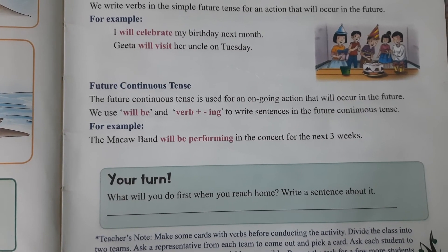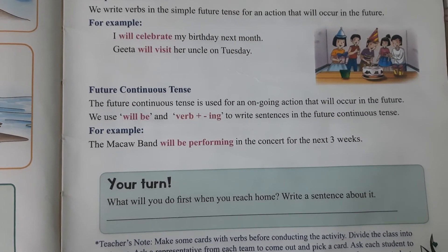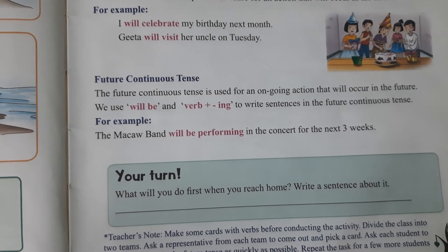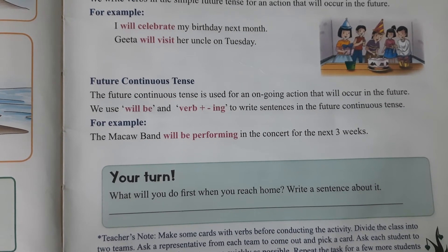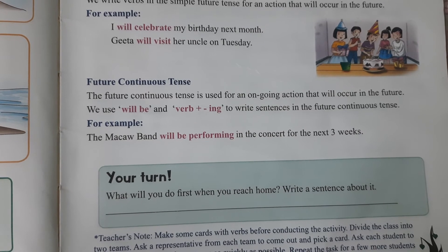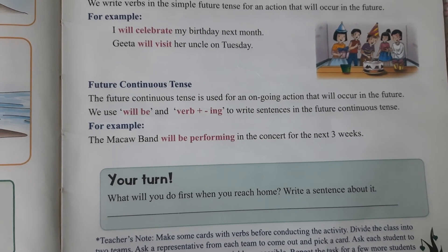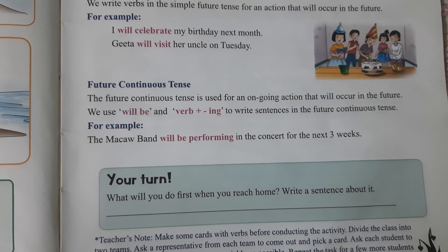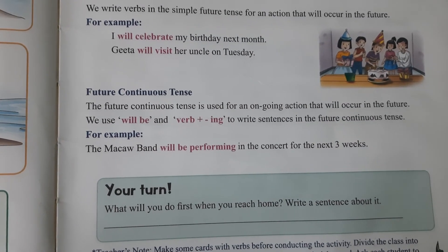The future continuous tense is used for an ongoing action. For example: The Mac band will be performing in the concert for the next three weeks. 'Will be performing' — here we are talking about a future continuous action.